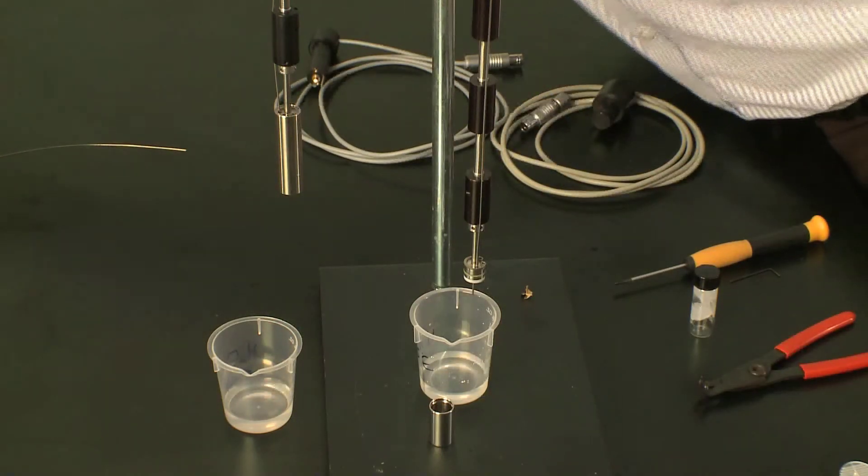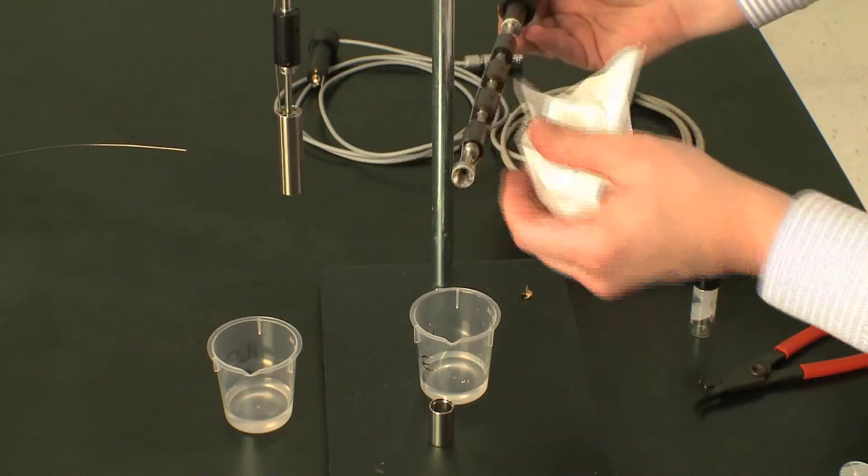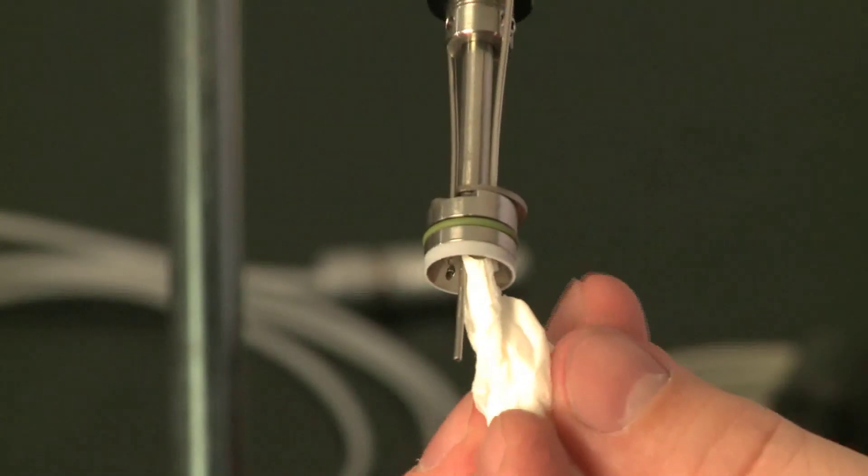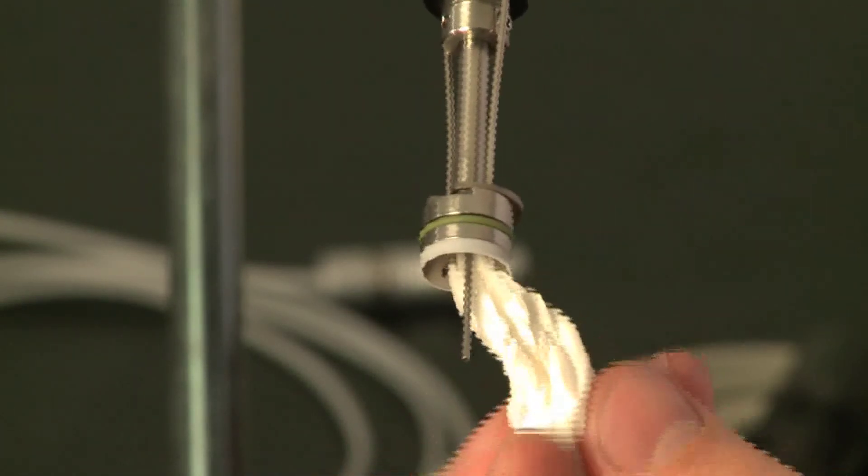Then the final step is to make sure that there are no water droplets on the bottom here that can fall into your sample. So we just dab those dry.